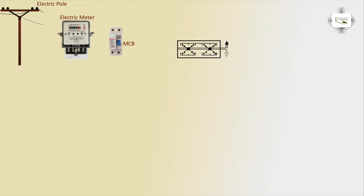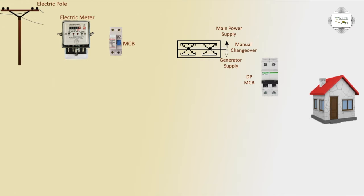This is a two-input, one-output manual changeover switch. It handles main power supply or generator supply. Main power supply comes in from above; generator supply comes from below. DP MCB outlet connects to home.